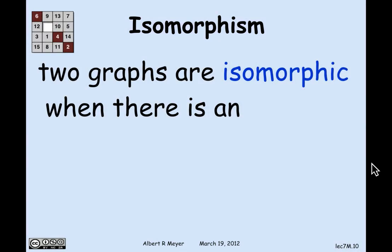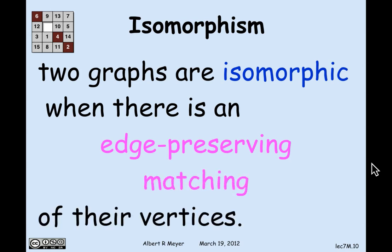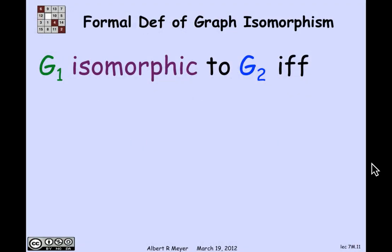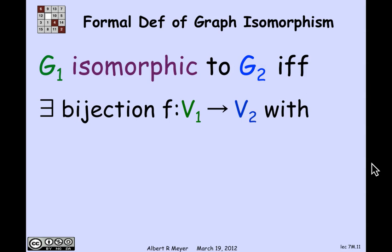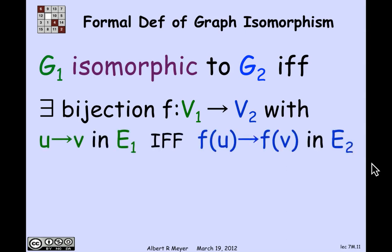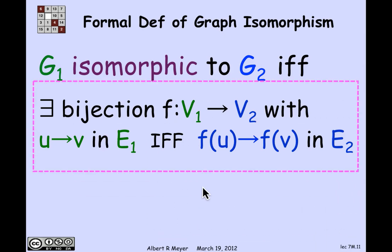Two graphs where the vertices correspond in a way that where there's a connection between two vertices, there's also a connection between the corresponding vertices are isomorphic. And the precise definition of isomorphic is that they're isomorphic when there's an edge-preserving matching between their vertices. Matching means bijection. And the formal definition is g1 is isomorphic to g2 if and only if there's a bijection from v1, the vertices of g1, to v2, the vertices of g2 with the property that if there's an edge between two vertices u and v in the first graph, then there's an edge between the corresponding two vertices f of u and f of v in the second graph. And that's an if and only if relation. There's an edge between f of u and f of v if and only if there's an edge between u and v in the original graph. That's the official definition of isomorphism for digraphs.